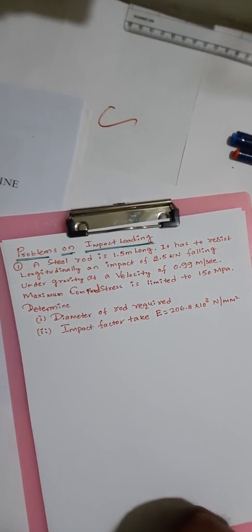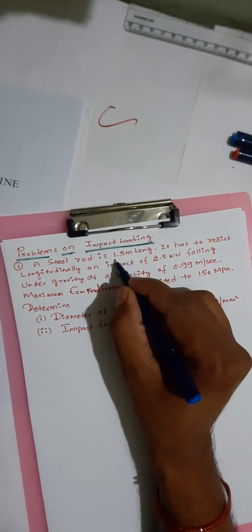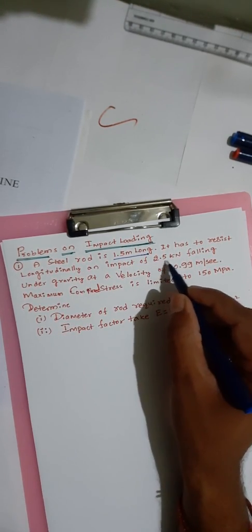In this class we will discuss some important problems based on impact load. A steel rod is 1.5 meters long and it has to resist longitudinally an impact of 2.5 kilonewtons falling under gravity at a velocity of 0.99 meters per second. The maximum stress is limited to 150 MPa.